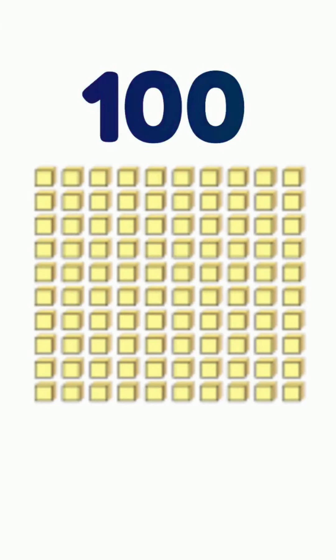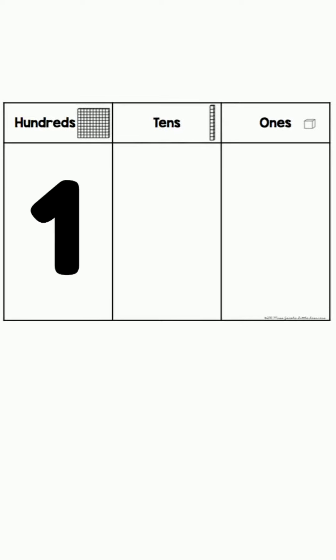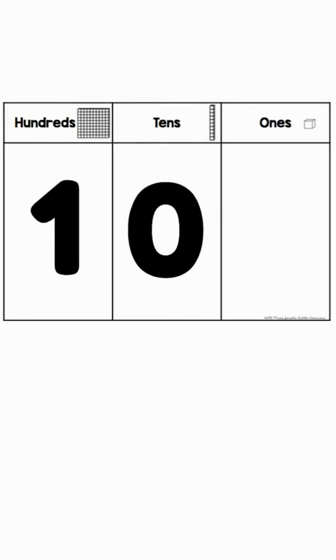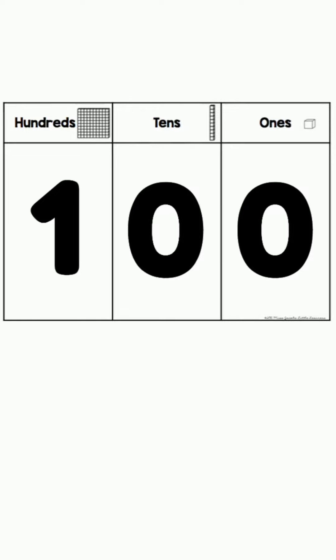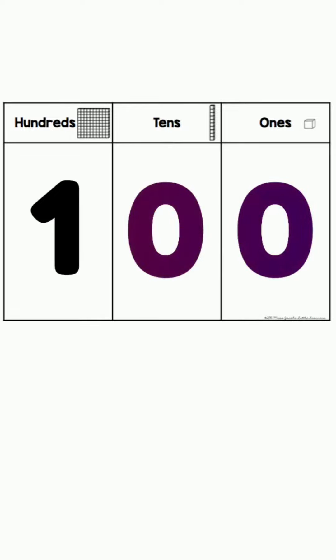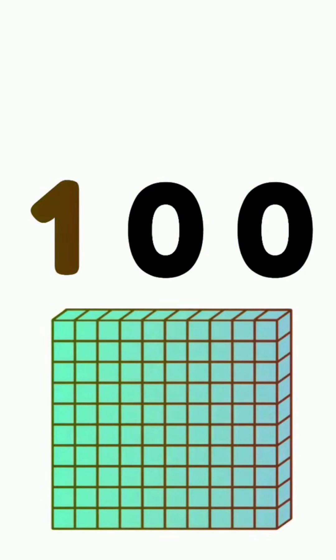Great job! When we write the number 100, we have a 1 in the hundreds place. Then we have a 0 in the tens place and a 0 in the ones place too. Those two zeros are acting as placeholders, so we can show 100.